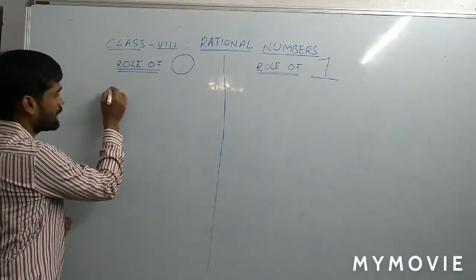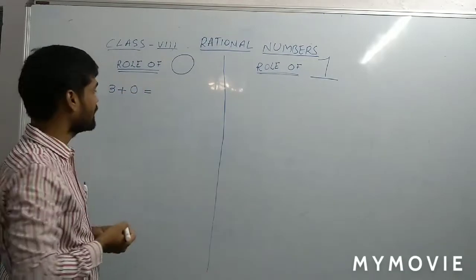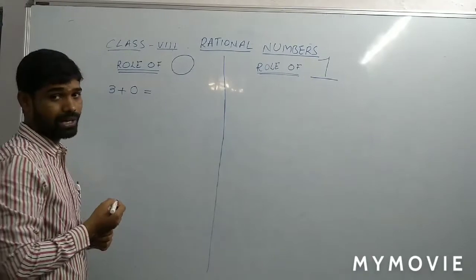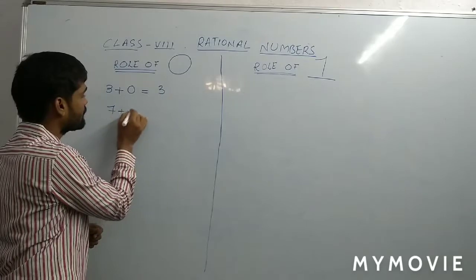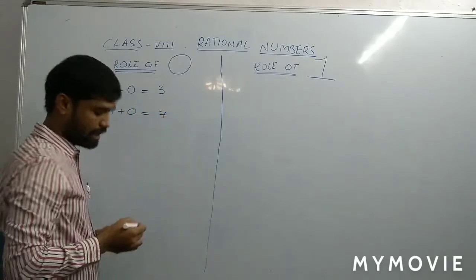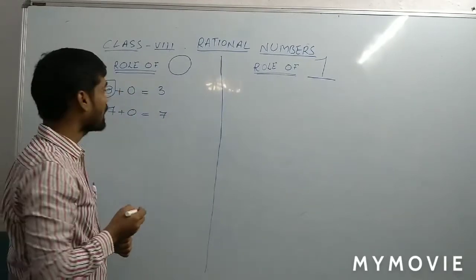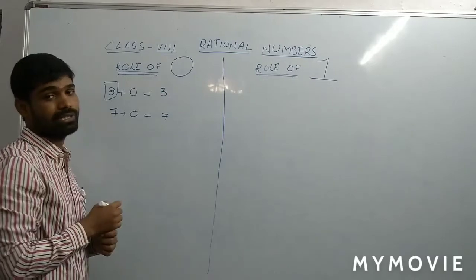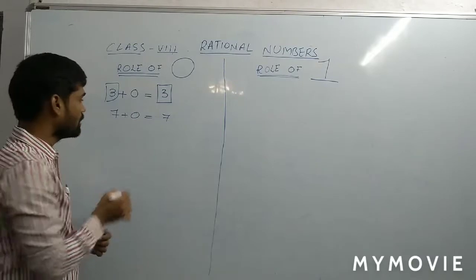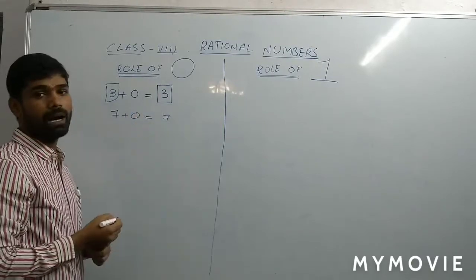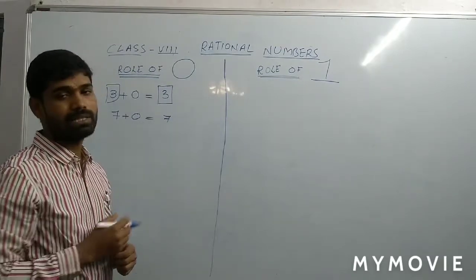Let us take any number: 3 plus 0. I hope you can say the answer — 3 plus 0, what is the answer? 3. And any other number, 7 plus 0 is equal to 7. Whatever rational number we are adding to 0, we get the same rational number as the answer. So, 3 plus 0 equals 3, and 7 plus 0 equals 7.